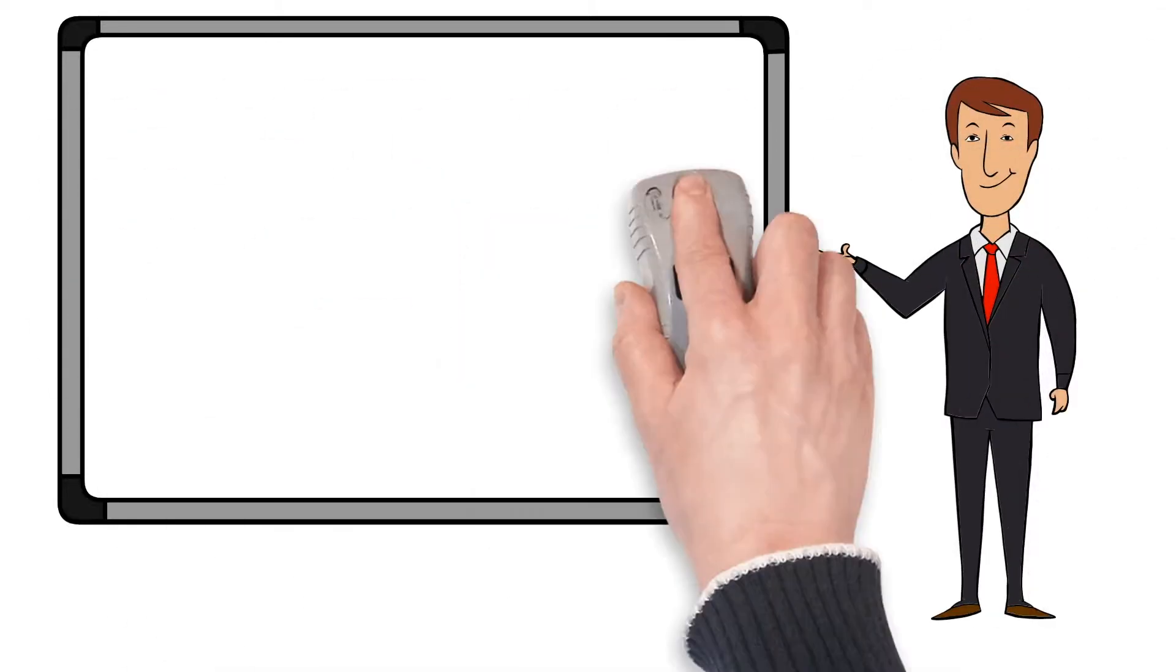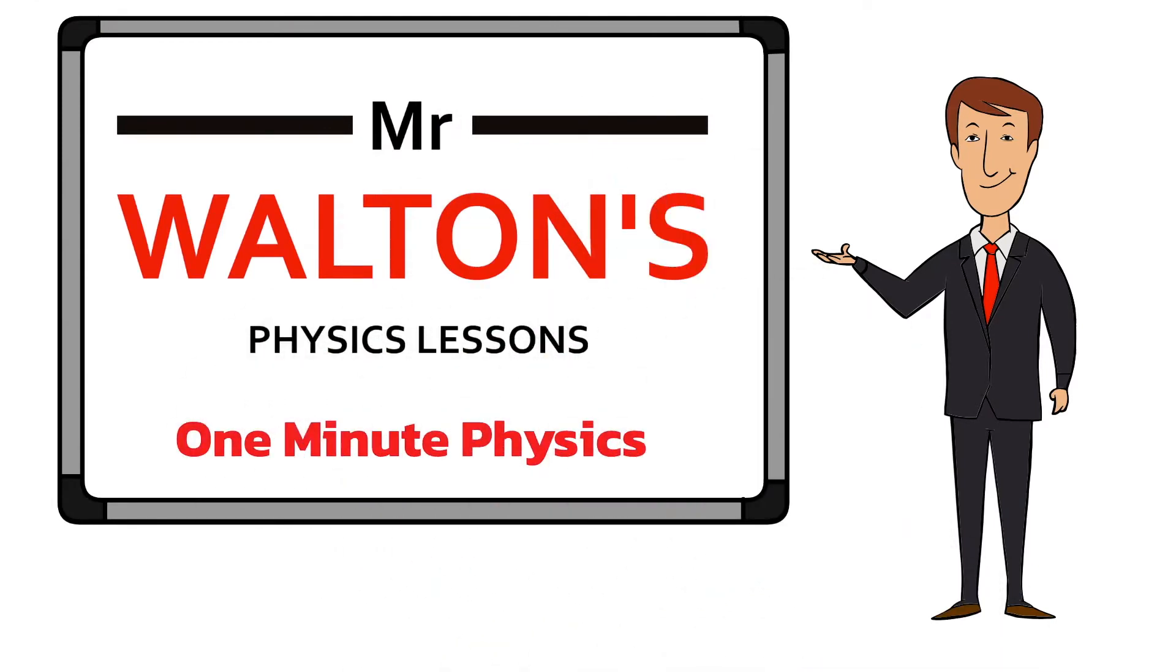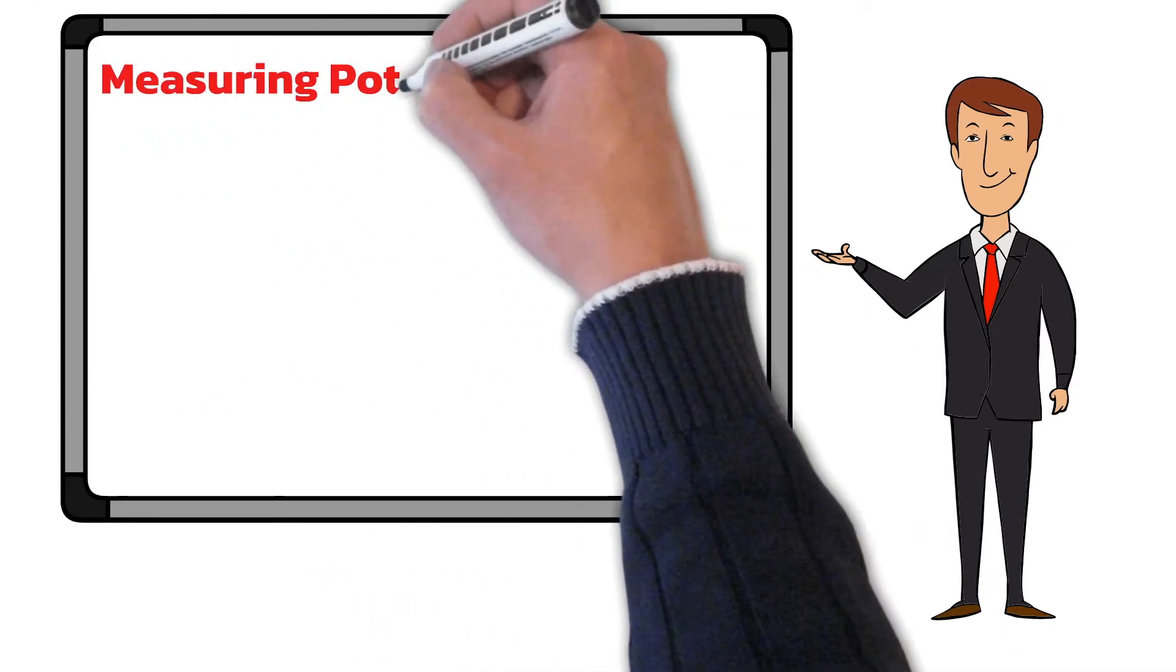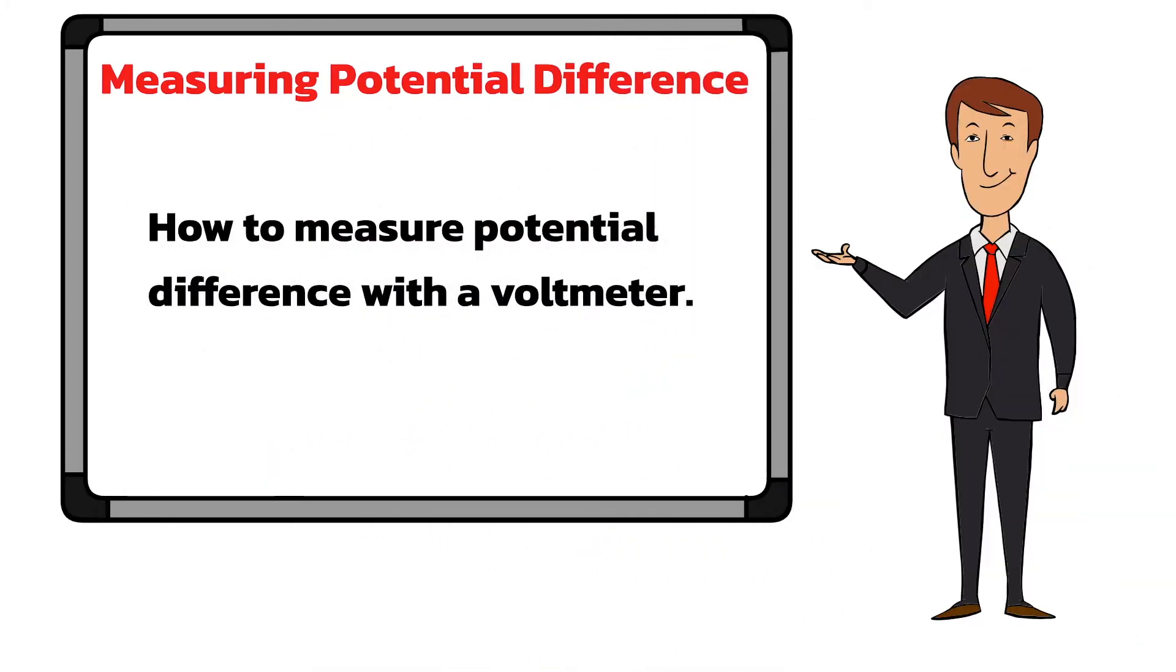Hello and welcome to Mr. Walton's physics lessons. In today's one minute physics lesson we'll be looking at how to measure the potential difference in a circuit. This is from the electricity topic of GCSE combined science and GCSE physics.